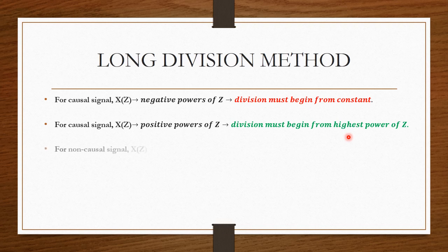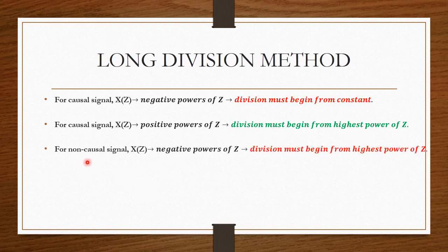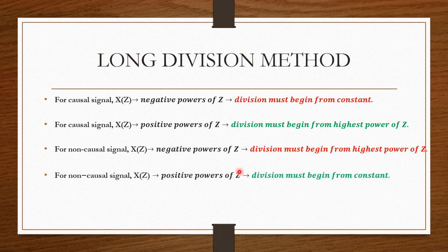The third and fourth points are for non-causal signals. For a non-causal signal, if X of Z is expressed in negative powers of Z, then division must begin from the highest power of Z. And if X of Z is expressed in positive powers of Z, then division must begin from the constant.